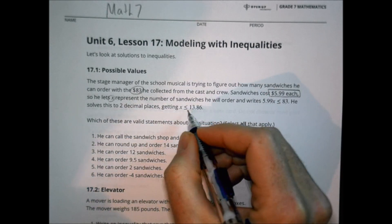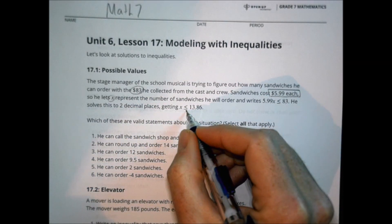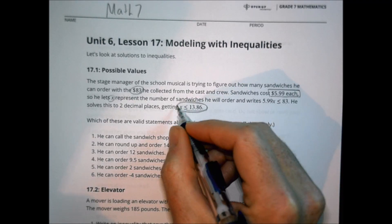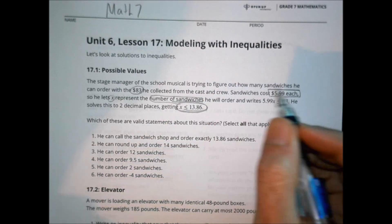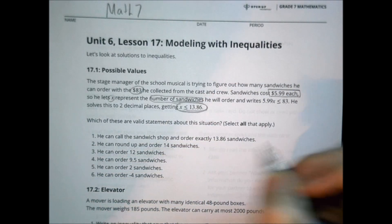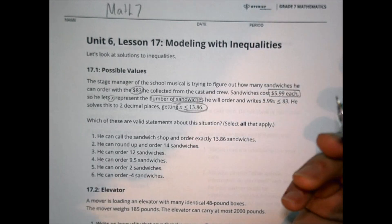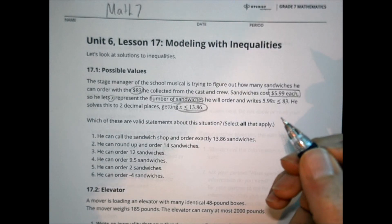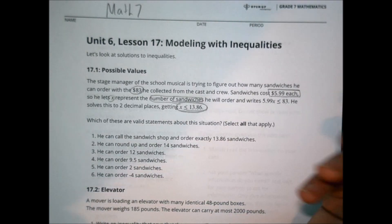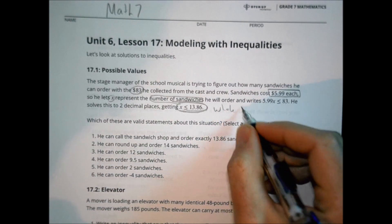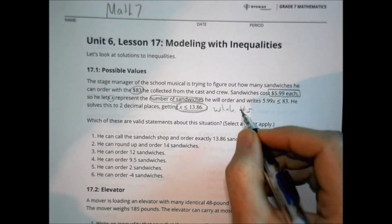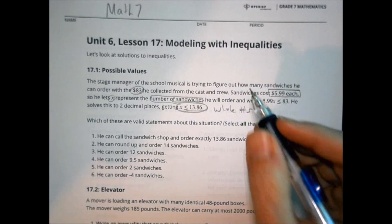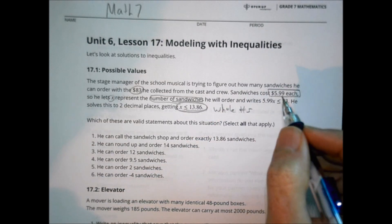The x represents the number of sandwiches he's going to order. So just thinking this through logically, if you go to a sandwich shop and say I want to order 13.86 sandwiches, are they going to allow you to order 13.86 sandwiches? Probably not. You probably have to work with whole numbers when you're actually ordering things. In this case with a sandwich, logically it makes sense to order with whole numbers.